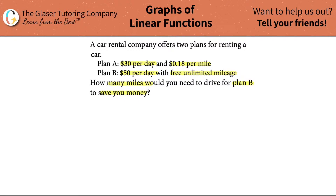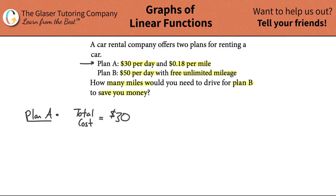For Plan A, how could I create an equation that represents what is stated? The total cost of Plan A would basically be equal to $30 per day times the number of days you're going to have the car. For example, if you had the car for five days and it's $30 per day, that's going to be $150.